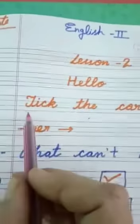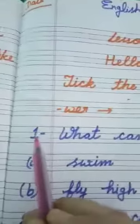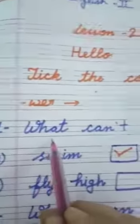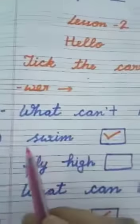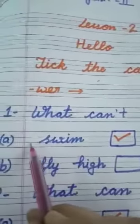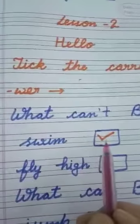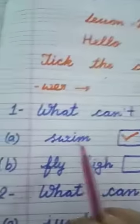First of all we will revise. Tick the correct answer. First, what can't Wordy do? Wordy can't swim. So tick the correct option: swim.